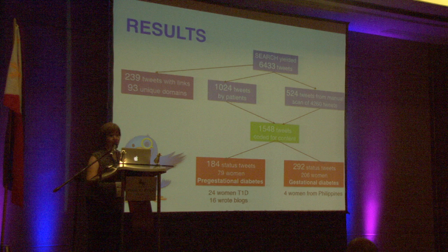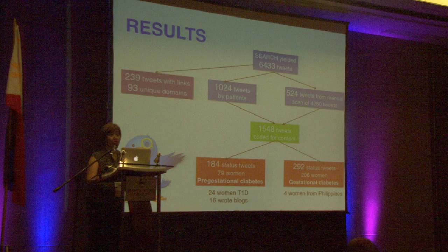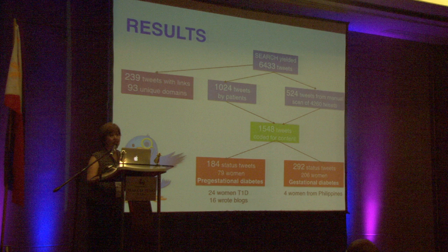In total, 1,548 tweets were coded for content. We were able to subdivide them into women with pre-gestational diabetes and women who had gestational diabetes. We could identify that 24 women in our sample specified their condition on their profiles, and 16 of them were actually bloggers.